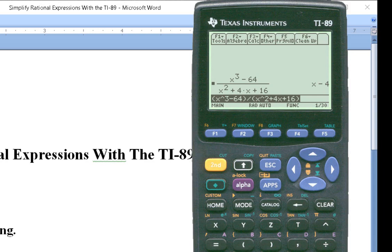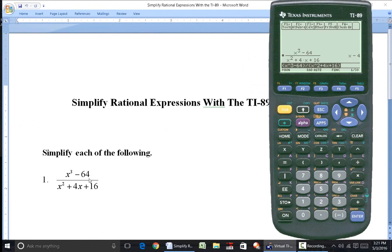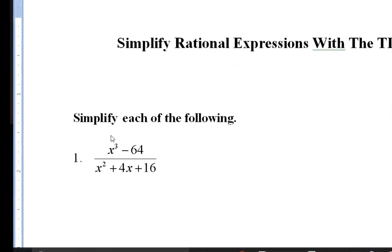Now we could have done this also by looking at the numerator as a difference of cubes. So if you use your formula for factoring the difference of cubes, the first factor would be x minus 4, and the second factor would be x squared plus 4x plus 16. But that's the same expression I have in the denominator, so those would cancel and I would end up with x minus 4. That's another way to do it.